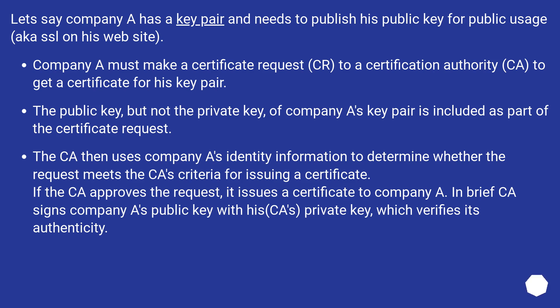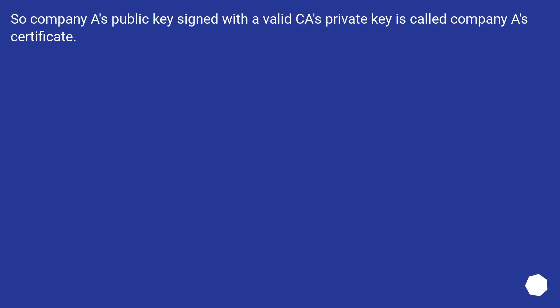The CA then uses company A's identity information to determine whether the request meets the CA's criteria for issuing a certificate. If the CA approves the request, it issues a certificate to company A. Briefly, the CA signs company A's public key with the CA's private key, which verifies its authenticity. So company A's public key signed with a valid CA's private key is called company A's certificate.